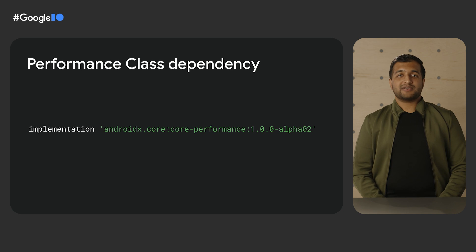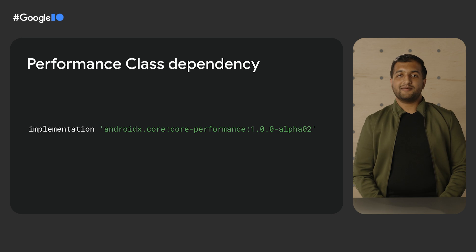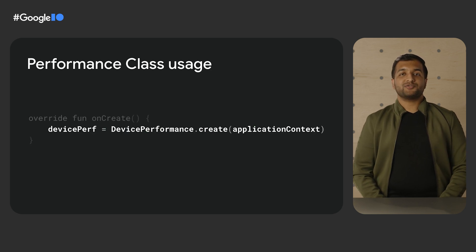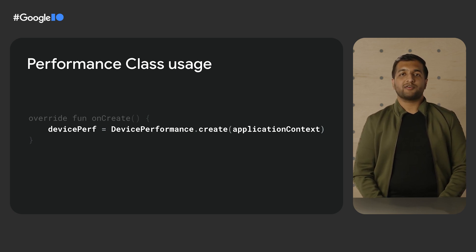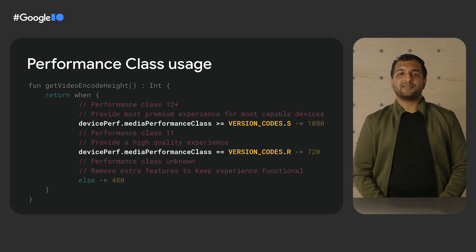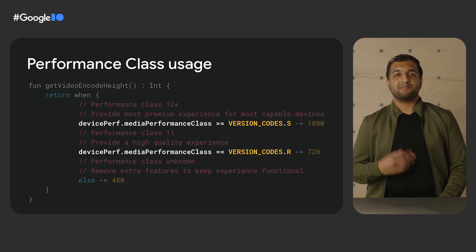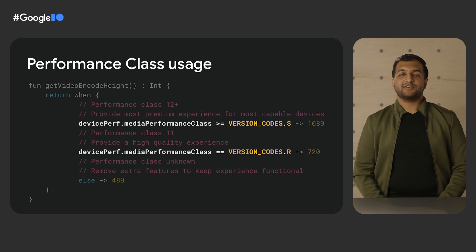To start using this library, include the core performance dependency in your build.gradle file. Then, to retrieve the current device's performance class, first create an instance of device performance in your application's OnCreate lifecycle event. With that done, you can get the Media Performance Class property wherever you want to tailor your app's experience based on the device's capabilities. In this example, we're using the reported performance class to adjust a video's resolution for the best user experience.